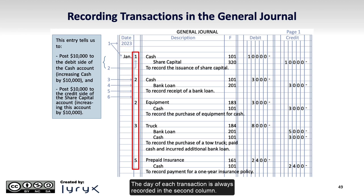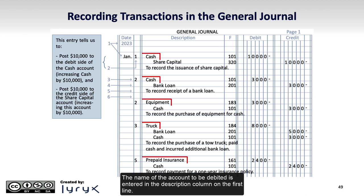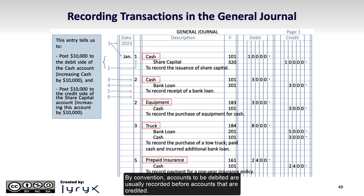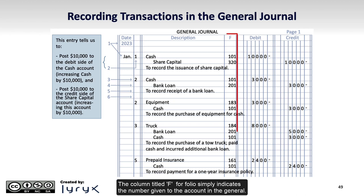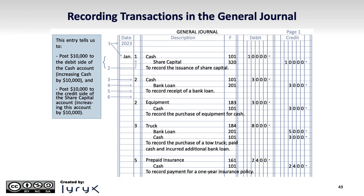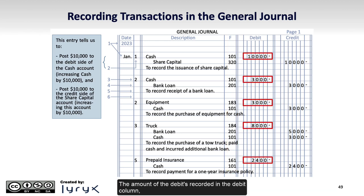The day of each transaction is always recorded in the second column. The name of the account to be debited is entered in the description column on the first line. By convention, accounts to be debited are usually recorded before accounts that are credited. The column titled F or Folio simply indicates the number given to the account in the General Ledger. The amount of the debits is recorded in the debit column, and a dash is often used by accountants in place of 0 cents.